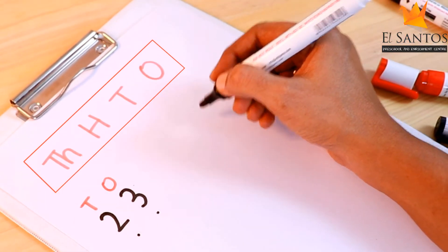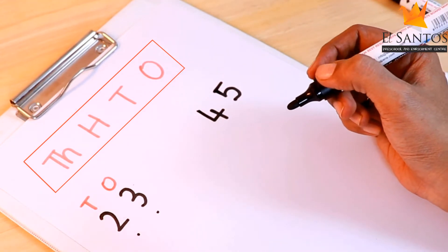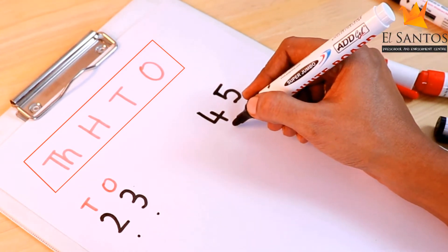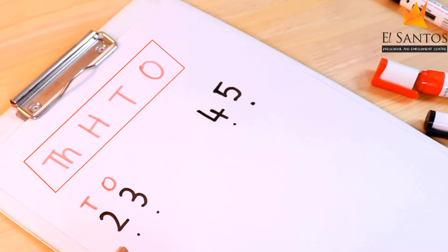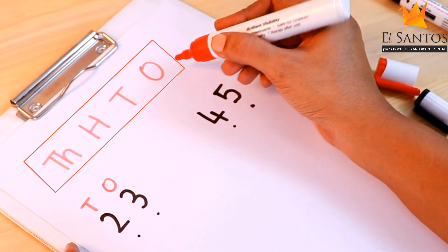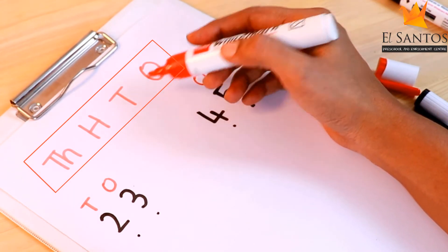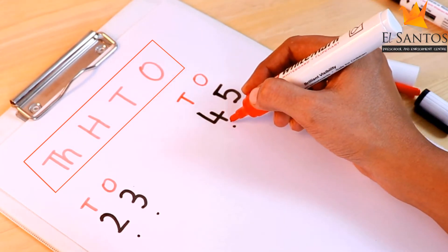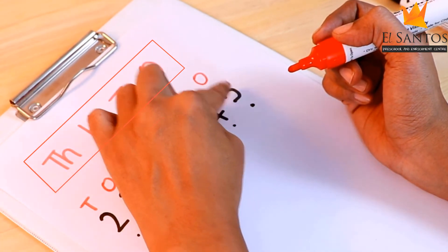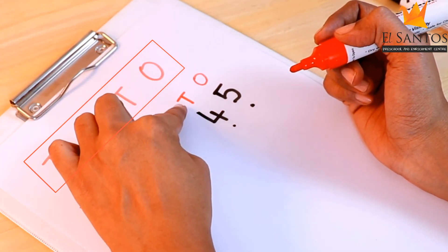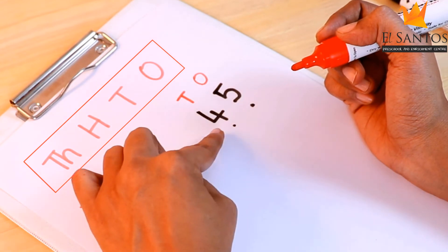Now let's write another number. This is also a two-digit number — one, two. Two-digit number because it has two places. Let's write the names of the places again on top of the numbers. The first place is the ones place, so we will write O on top of five. The next place is the tens place, so we will write T on top of four. Now let's read the number: four tens, five ones. Four tens are forty and five ones are five. So the number is forty-five.